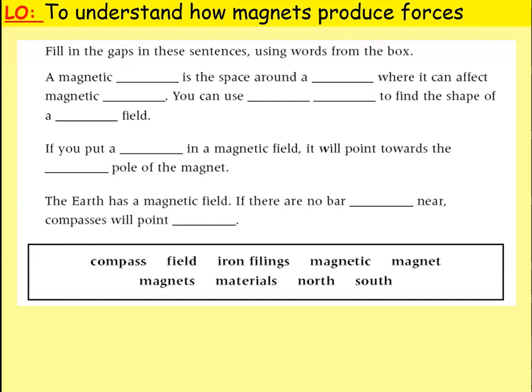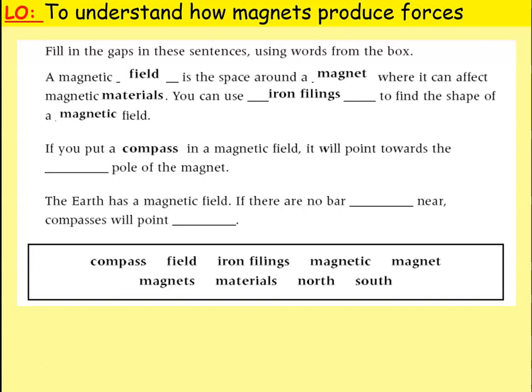More fill-in-the-gap answers: a magnetic field is the space around a magnet where it can affect magnetic materials. You can use iron filings to find the shape of a magnetic field. If you put a compass in a magnetic field, it will point towards the north pole of the magnet. The Earth has a magnetic field — if there are no bar magnets nearby, compasses will point north.